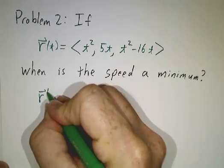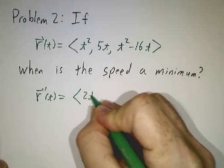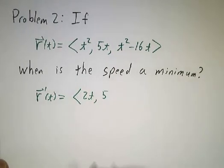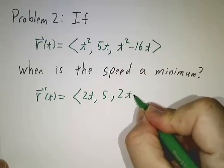So again, we have to figure out the velocity. Only now the derivative of t squared is 2t. Derivative of 5t is 5. Derivative of t squared minus 16t is 2t minus 16.